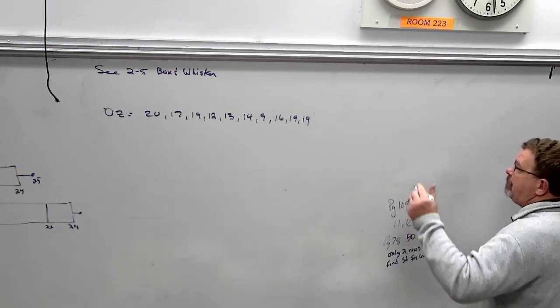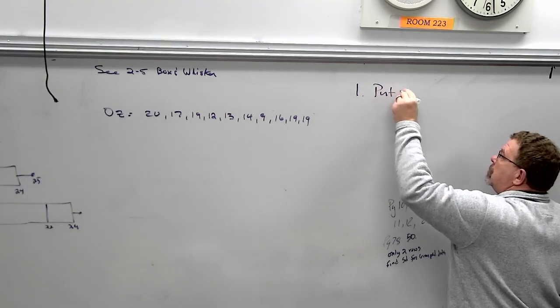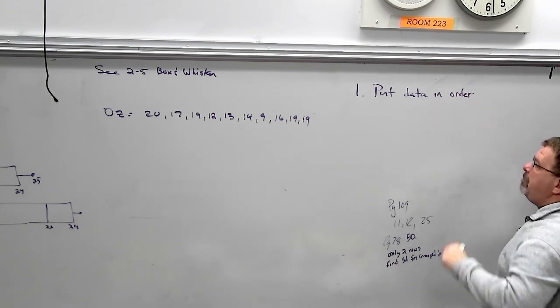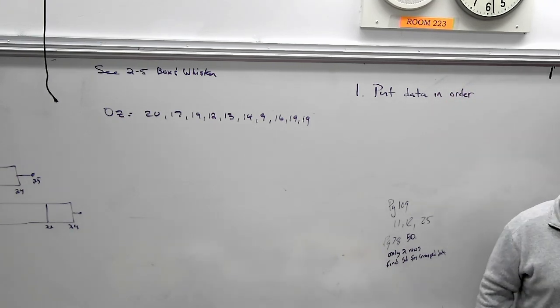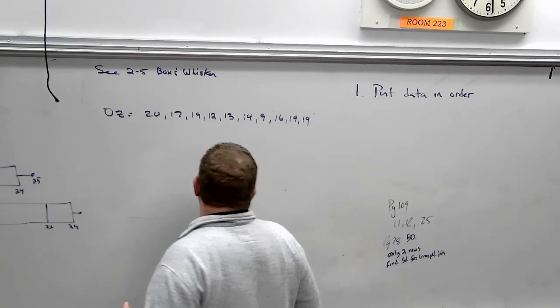So here are the steps. Number one. Since you are finding the median three times, the median three times, you have to put your data in order. Whenever you find the median, it always has to be in order. Okay, so let's take a minute. Let's put this data in order.